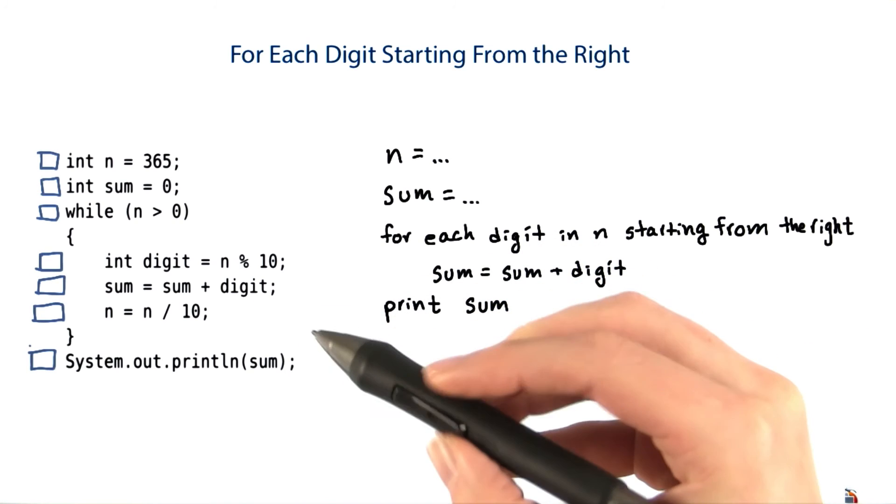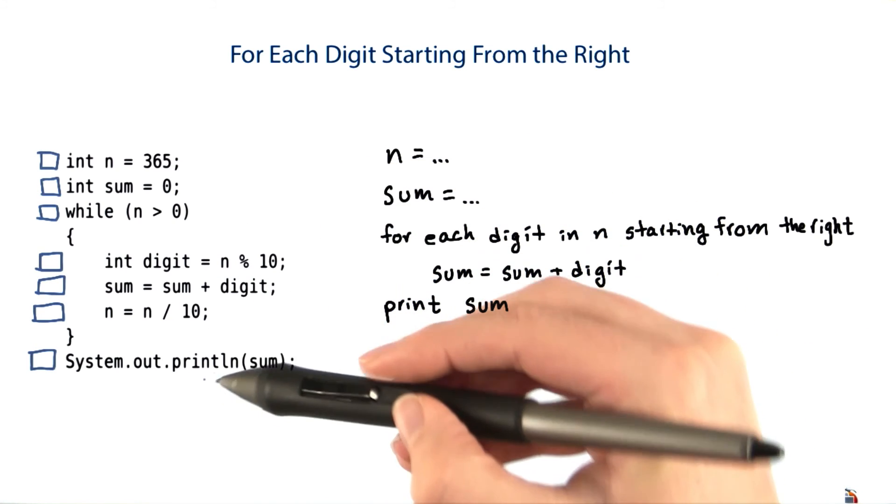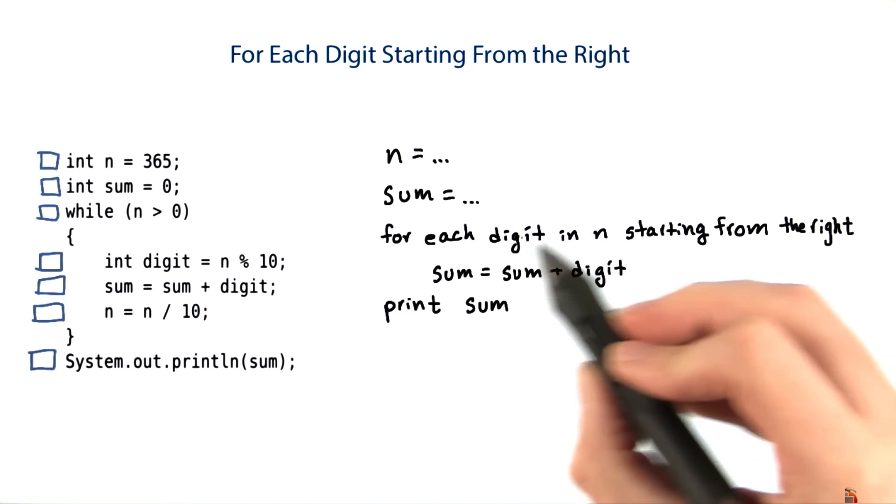Now here's a question. Which of these lines of code is responsible for making sure that the code looks at each digit in n?